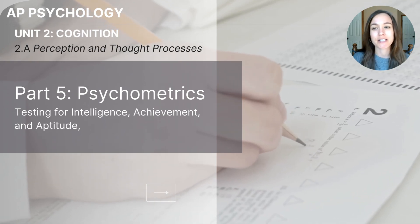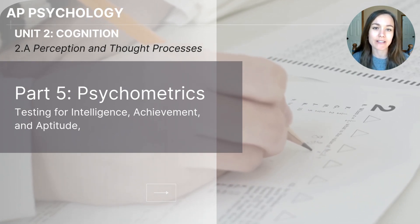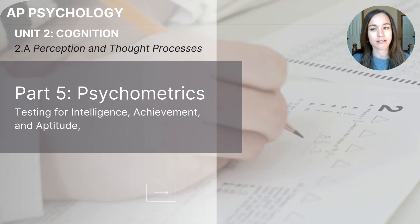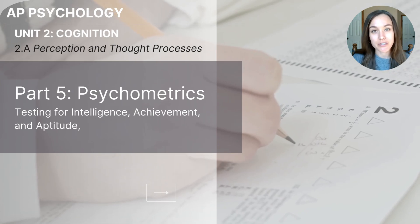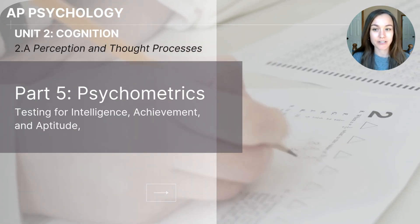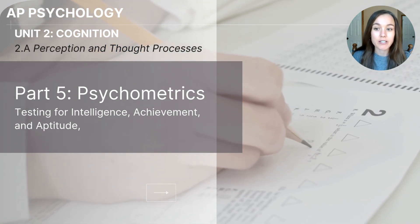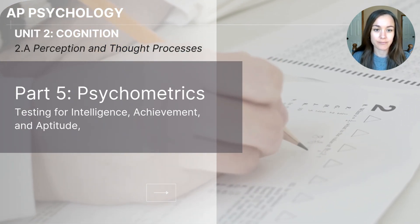Hi everyone! This video is part 5 of the 2A series on perception and thought processes from the Unit 2 Cognition Unit for AP Psychology students. This particular lesson will focus on psychometrics.